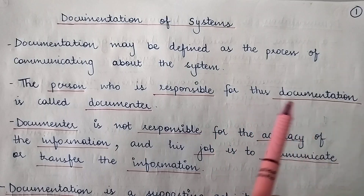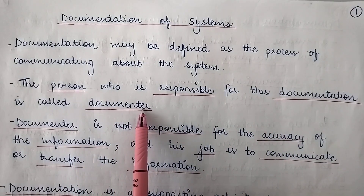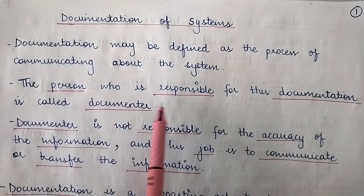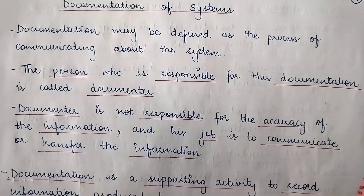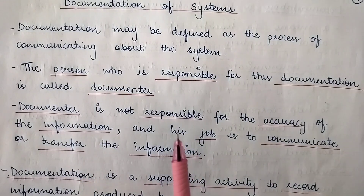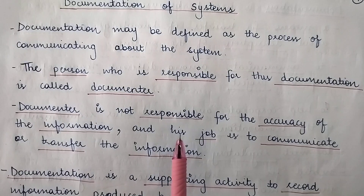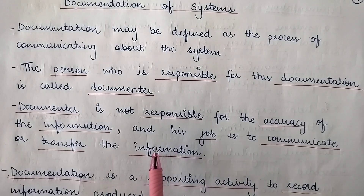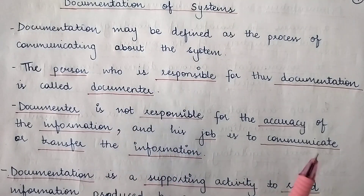The person who is responsible for this documentation is called a documenter — a person who documents all this information. The documenter is not responsible for the accuracy of the information; his job is only to communicate or transfer the information. The documenter is not concerned about how accurate the information provided to him is. Whatever is being communicated about the system at all stages of system development, he just writes that down.